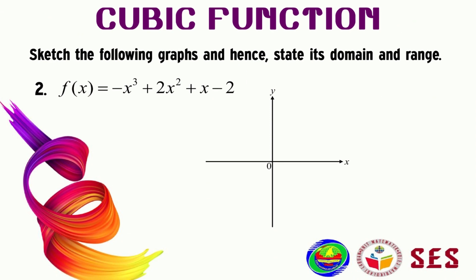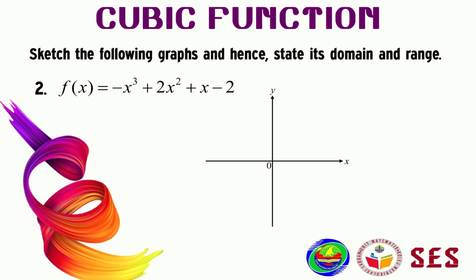Question two: f(x) = -x³ + 2x² + x - 2. When we factorize this, we obtain (x - 2)(x + 1)(x - 1). This question is almost similar to number one, but now we have a negative graph because the coefficient of x³ is negative.